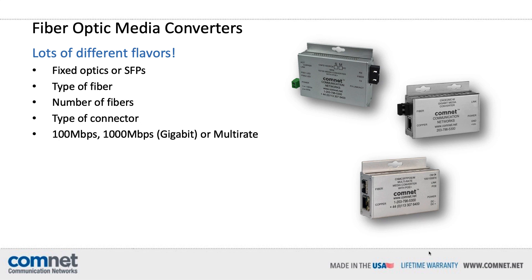Ethernet runs at different speeds, so you also have to decide what data speed you want running over that fiber. There is 100 megabits per second, 1000 megabits per second — also called gigabit — or multi-rate media converters that allow you to slide in either a 100 or 1000 megabit per second SFP for flexibility.